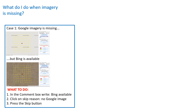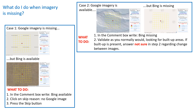In case two, Google imagery is available but Bing is missing. In the comment box, write Bing missing. If there is no built-up in the Google imagery, select no built-up in step two. Otherwise, if there is built-up, select not sure in step two and validate the image as you normally would by shading the built-up areas. Press the submit button when you are finished.